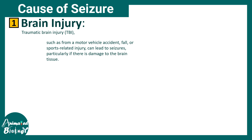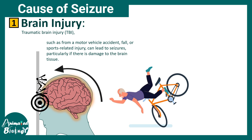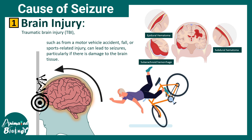The causes of seizures include traumatic brain injury. For example, hitting your head hard or falling from a bike can lead to severe brain trauma that might result in a blood clot — such as epidural hematoma, subarachnoid hematoma, or subdural hematoma — and these clots can lead to seizures or uncontrolled brain activity.